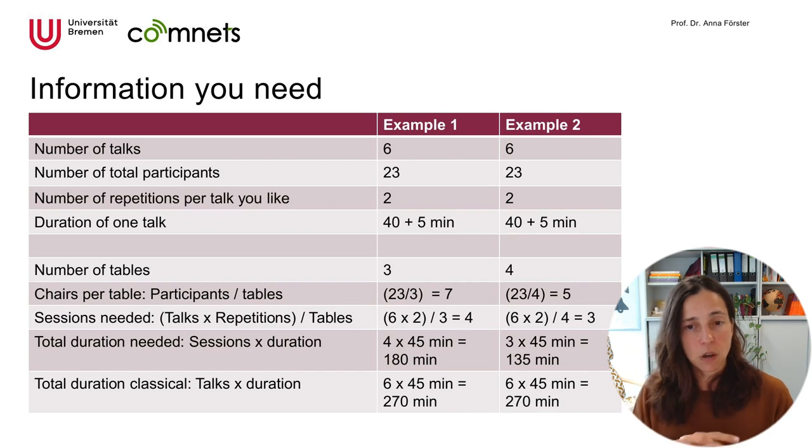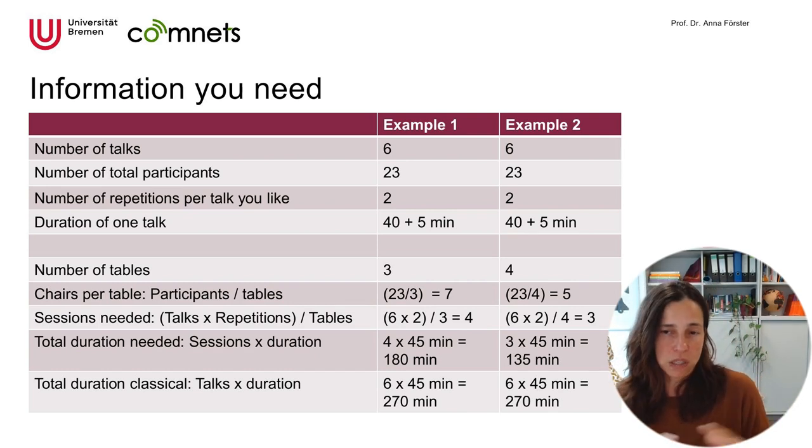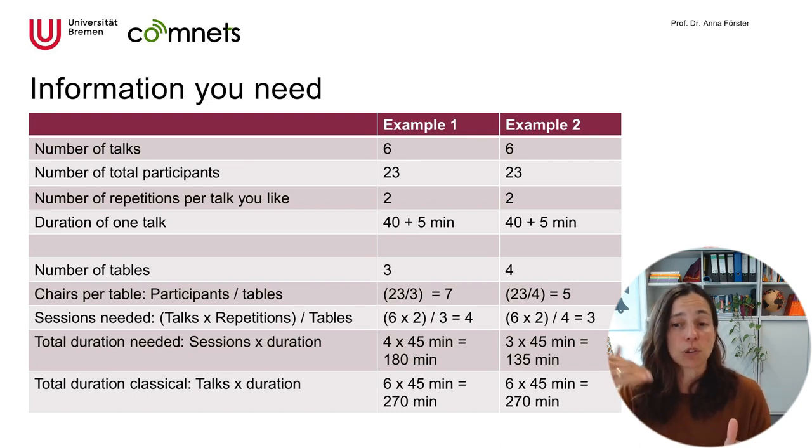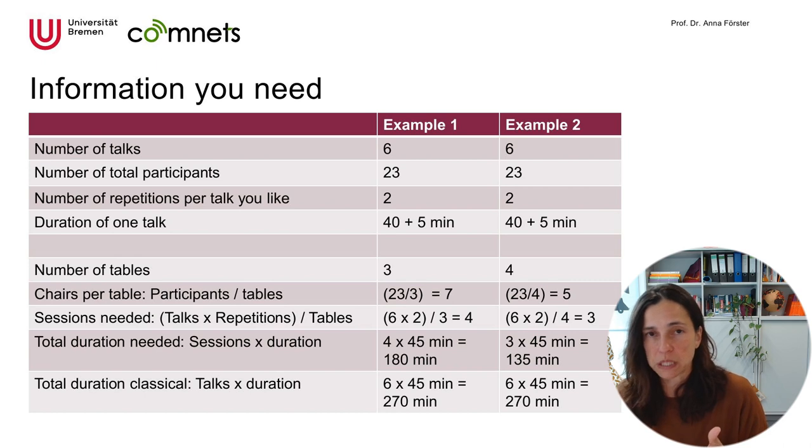How many sessions would you need? Obviously, you will need to do it several times because otherwise in just one session, you can only accommodate three talks for the three tables. So you have to repeat. Let's see how to do that. This is just the number of talks you have multiplied by the number of repetitions you would like to have, in this case two, divided by the number of tables. It's so simple. Hopefully it all divides. If not, you can play a little bit with the numbers. Or you can simply round up the session so that the last session or one in the middle will have less tables occupied. This is perfectly fine. So in this case, we have six talks, we decided for two repetitions. So we have a total of 12 talks which we need to accommodate. We divide them by the number of tables, which is three, and we get four sessions. If you divide by four tables, it will be three sessions.